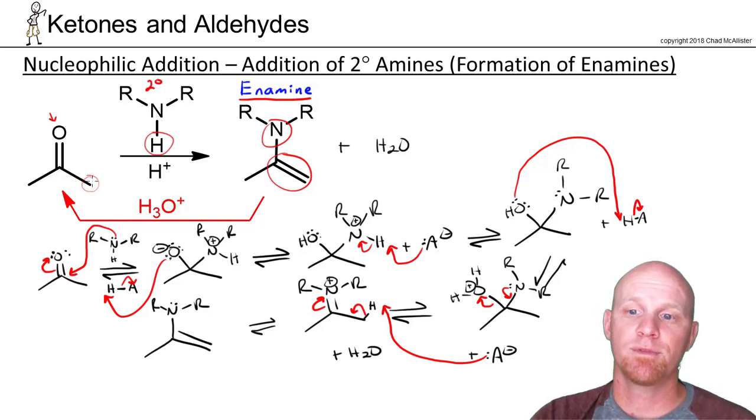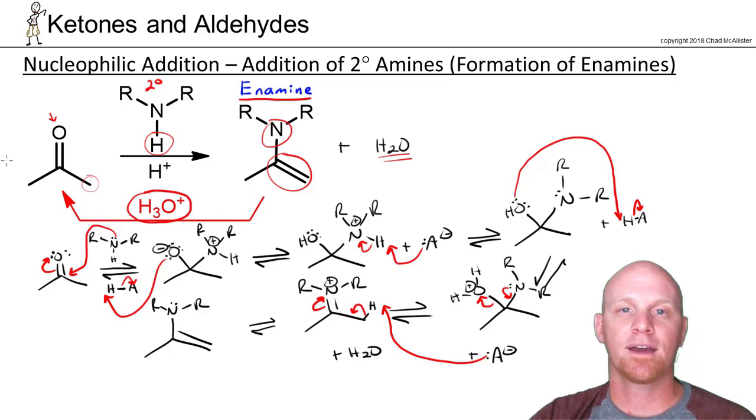And again just like with imine formation you're forming water over here and the reaction is completely reversible at every step. So if you add a bunch of acid with water, it's acid catalyzed in the reverse as well, i.e. H3O+, you reverse it right back and your enamine goes back into being a ketone.